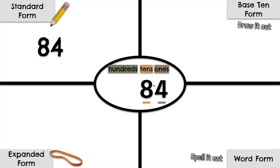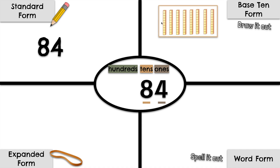Now let's show 84 in base 10 form. That means we will draw it out using base 10 blocks. We need 8 tens: 1, 2, 3, 4, 5, 6, 7, 8. That's 8 tens.